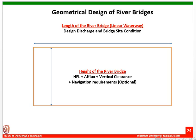The height of the bridge can be fixed by adding the high flood level plus afflux, and if the water body is used for navigation, also adding the navigation clearance. Otherwise, in all other cases, you have to provide the height based on the flood level, afflux, and vertical clearance. This is how you can fix the dimensions for the bridges.